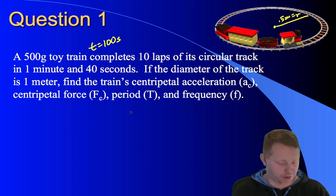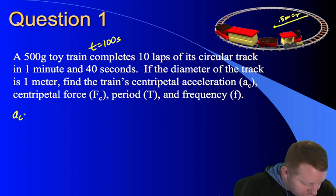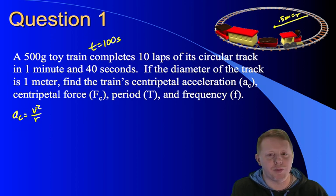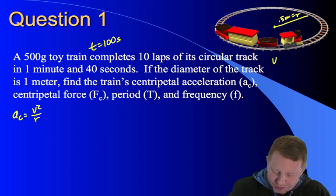Let's start with centripetal acceleration. We know centripetal acceleration is v squared over r. And if I look at that v squared, the v, we don't know that yet, but we could find it. Remember that speed is distance over time.